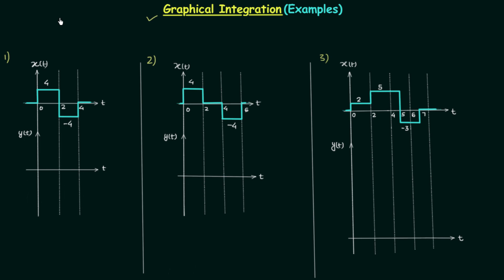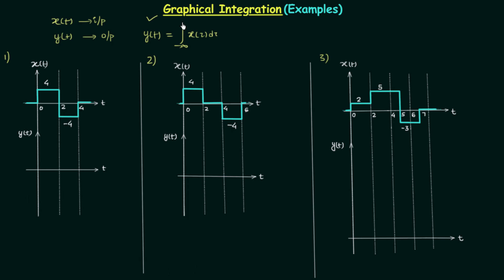Signal xt is the input signal and signal yt is the output signal. The system we are using performs integration, so we are using an integrator. Signal xt is fed as input and output yt is taken out of the system. So yt is equal to the integration of signal x(tau) d(tau) from minus infinity to t, and we will increase t slowly up to infinity.